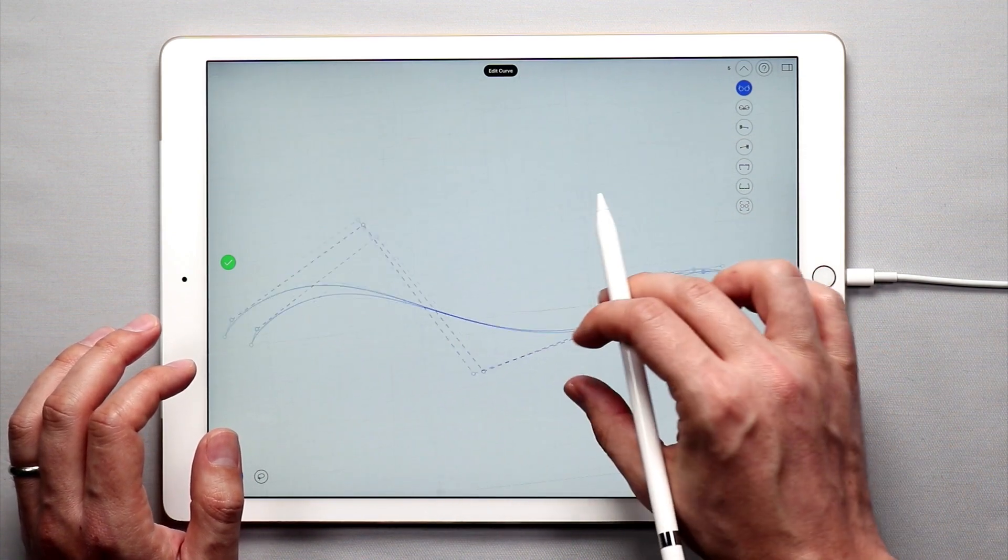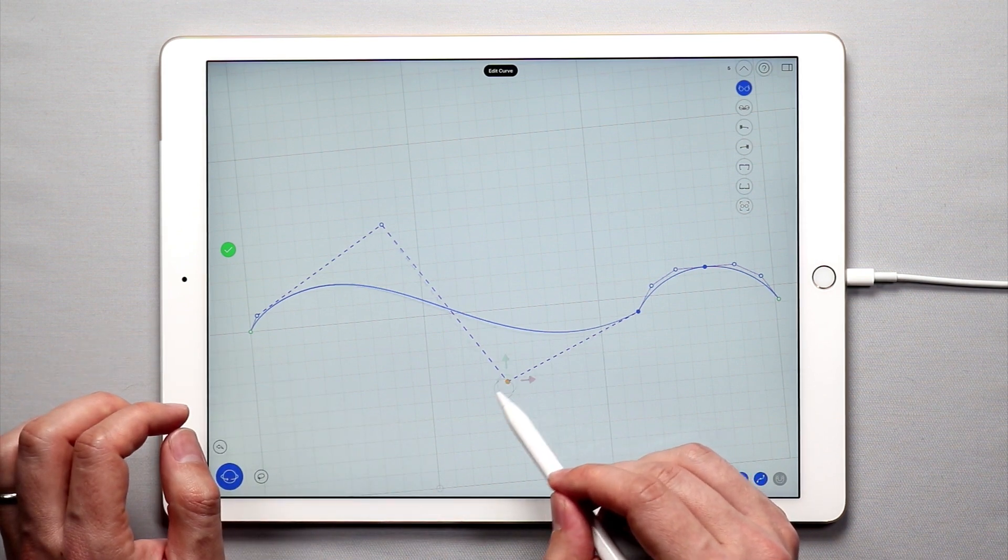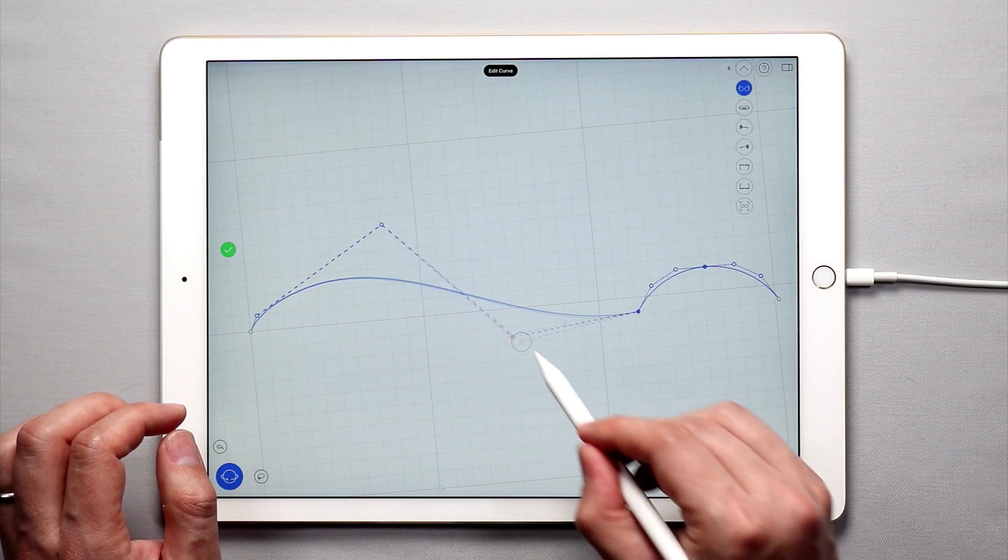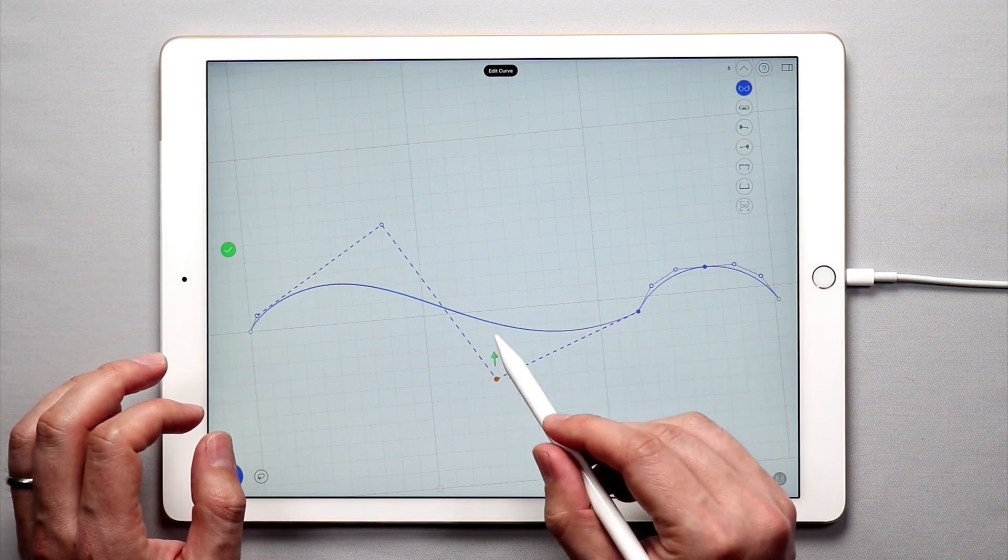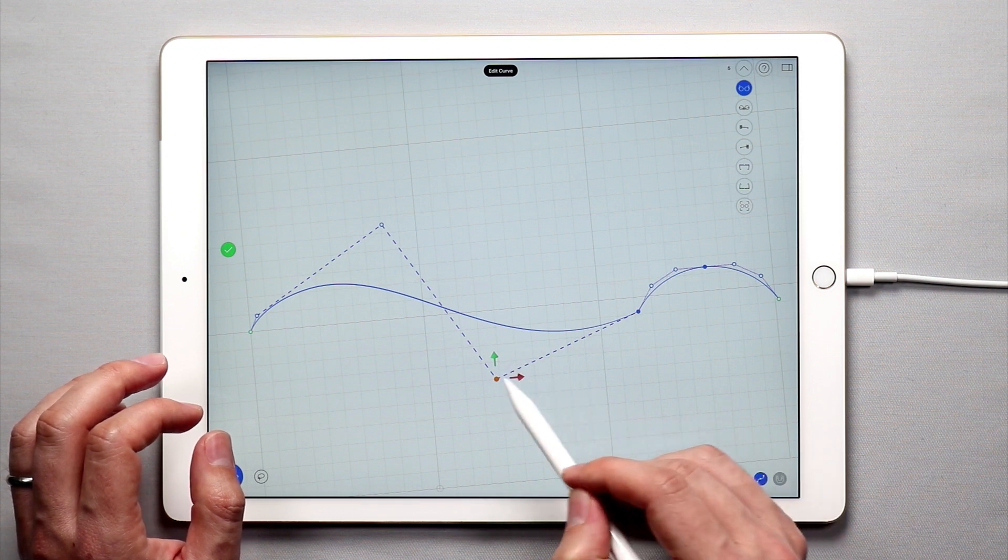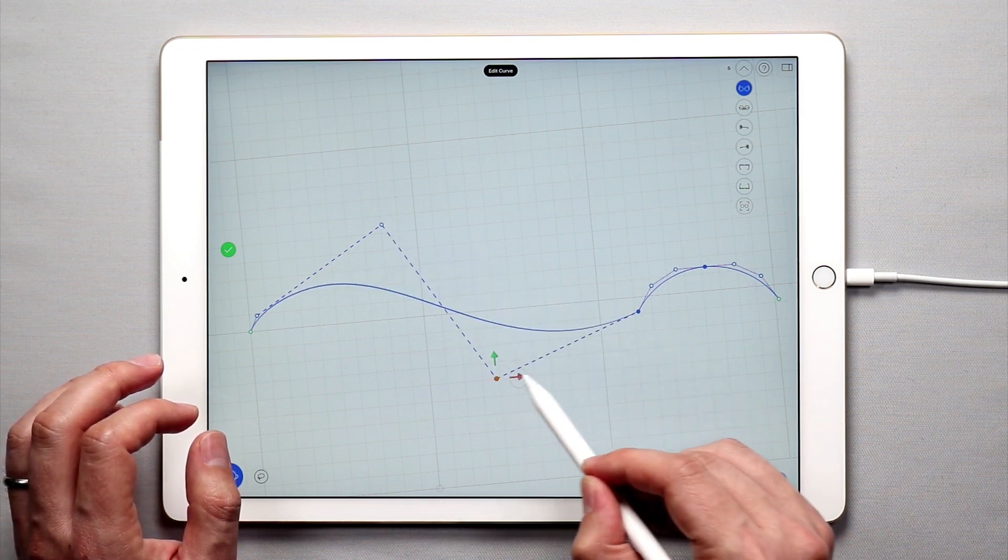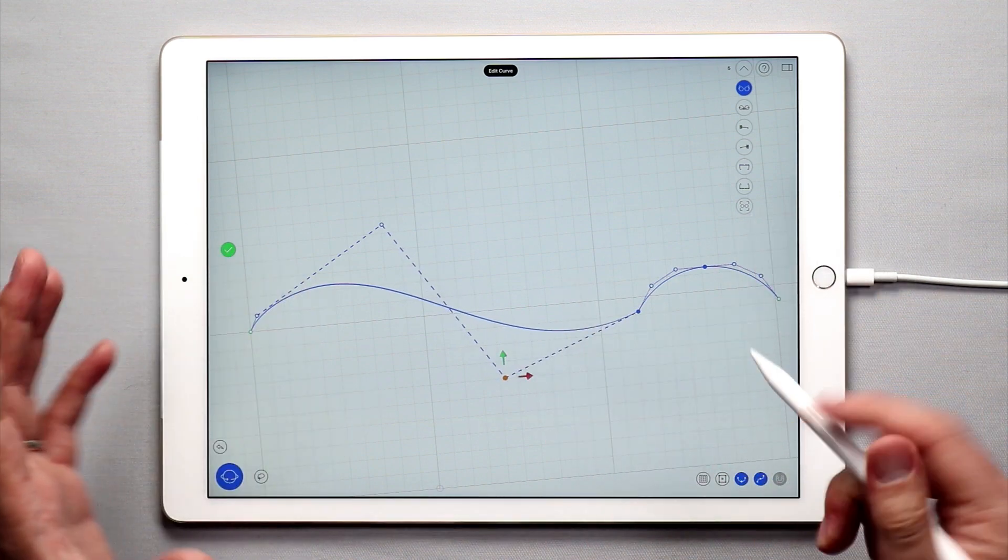Now I can grab any of these control points, and when I have one control point selected it's going to be yellow. I can move it around in any way. As I move this around right now I'm moving around freestyle. I also have these little arrows around the point, and that allows me to move a curve perfectly vertically or perfectly horizontally if I want to work with it in more of a precise mode.